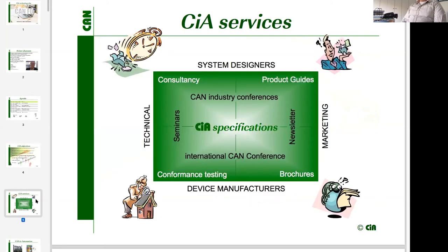Briefly: CAN Automation develops and maintains CAN-related specifications. For these specifications, we do marketing so that people are aware they exist to assist users in their application fields. We provide product guides where you can find corresponding tools and products you may need for your projects, as well as brochures explaining why a CAN-based solution is reasonable to use.